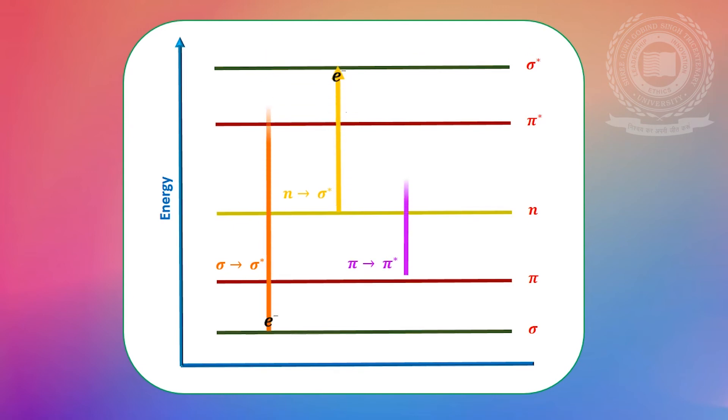Pi to pi star transition: Transition in which an electron is excited from pi bonding molecular orbital to pi star anti-bonding molecular orbital. Pi to pi star transitions are shown by the compounds containing double bonds and triple bonds, that is, alkenes, alkynes, carbonyl compounds, and azo compounds.